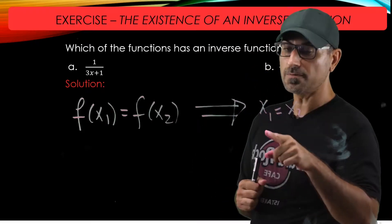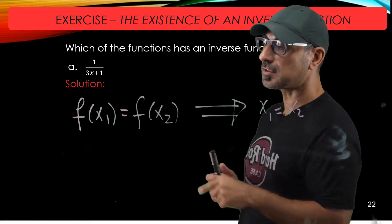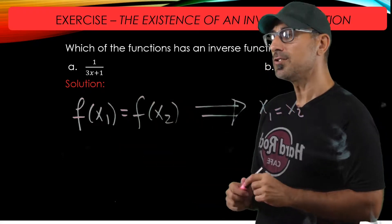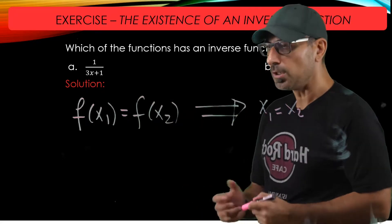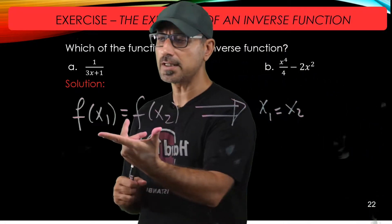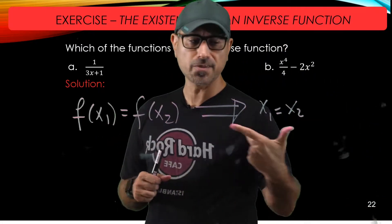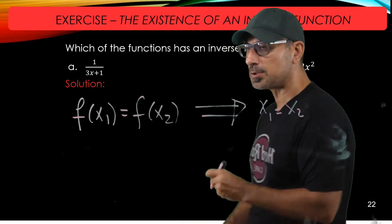So in other words, if these guys are not equal, that means that the corresponding function values at those points cannot be equal. So let's try to set this property and verify that x1 has to be equal to x2.